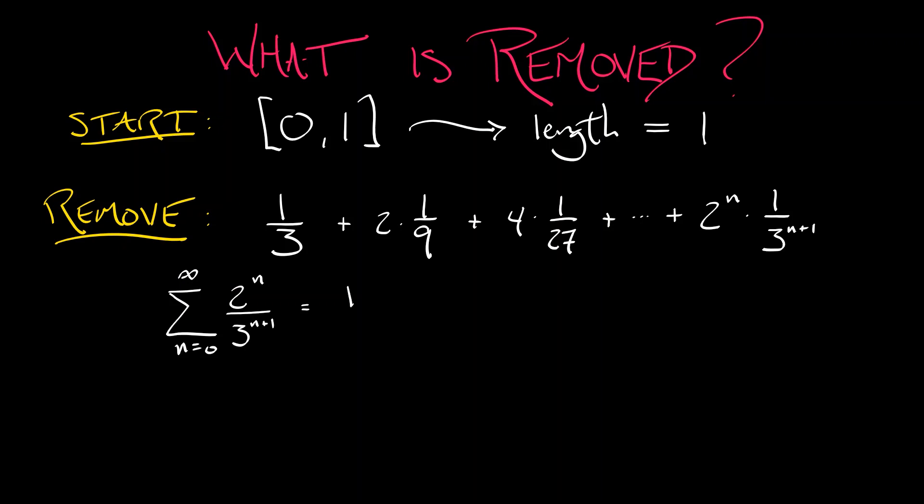If I pull out a factor of one-third, then what's left is the sum of two-thirds to the n. That's a straight-up geometric series. What I get for the total length is one-third times quantity one over one minus two-thirds. That's one-third times three. That's one. I've removed the entire length of the interval.